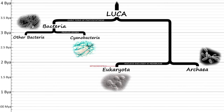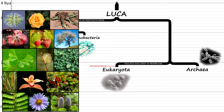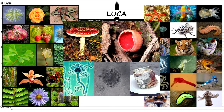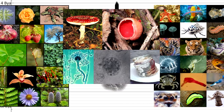Hello everyone and welcome back to Kobean History. Today we are going to have a look at how plants, fungi and animals evolved — the evolutionary relationship between them — as well as some other organisms that don't fall in any of these three kingdoms.